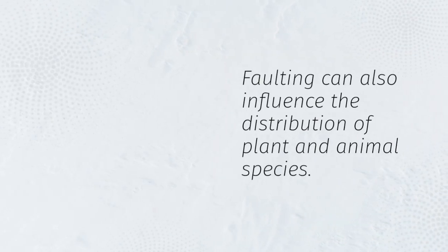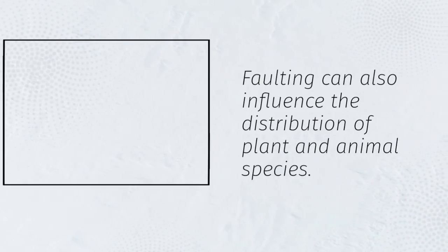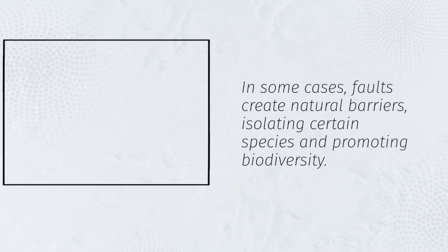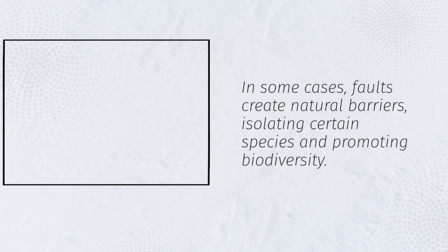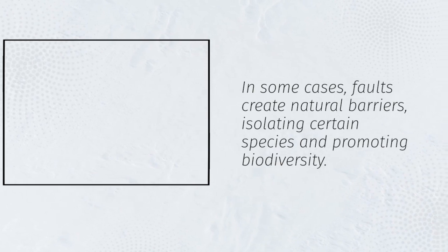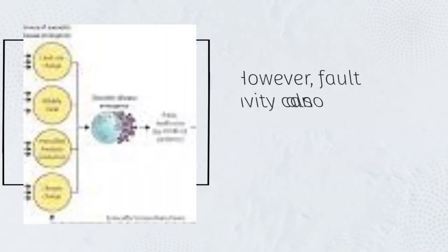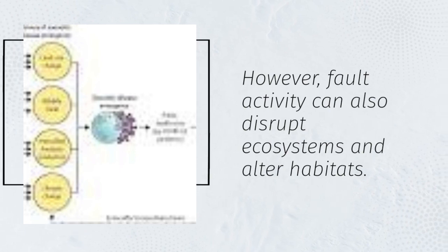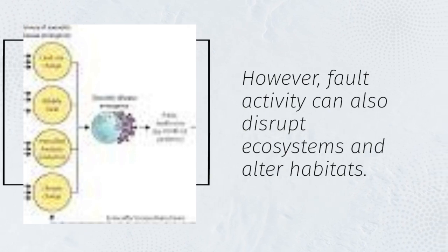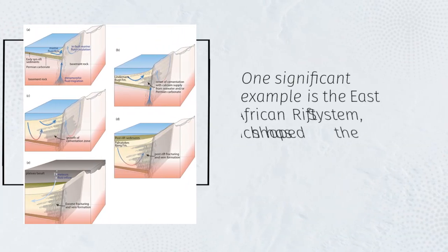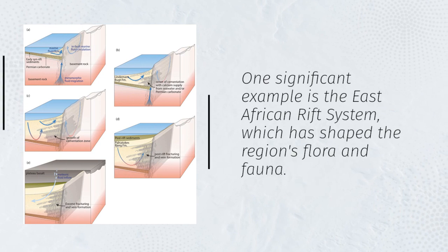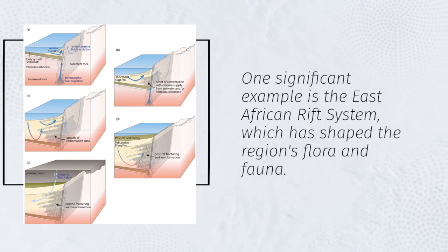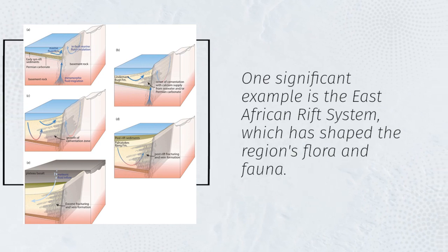Faulting can also influence the distribution of plant and animal species. In some cases, faults create natural barriers, isolating certain species and promoting biodiversity. However, fault activity can also disrupt ecosystems and alter habitats. One significant example is the East African Rift System, which has shaped the region's flora and fauna.